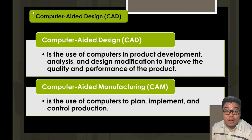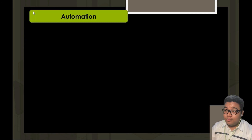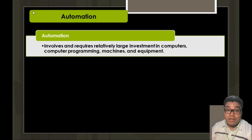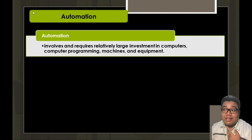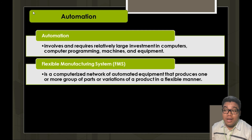Computer-aided manufacturing also involves simulations in the system, wherein production and the required production period for a specific order can be simulated. Automation involves a relatively large investment in computers, computer programming, machines, and equipment. It is a situation where human intervention is minimally required — not that it's unnecessary, but human involvement mainly starts the process. For example, certain machines automatically close the lids on bottles.